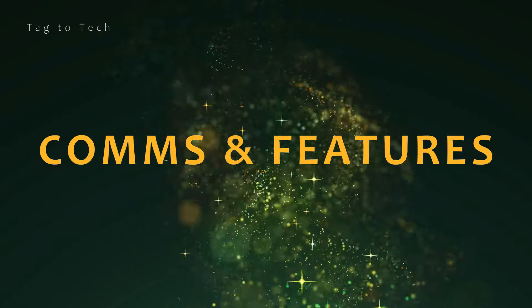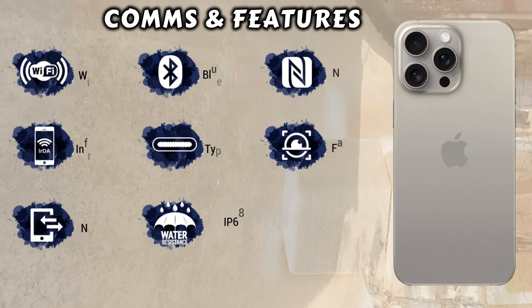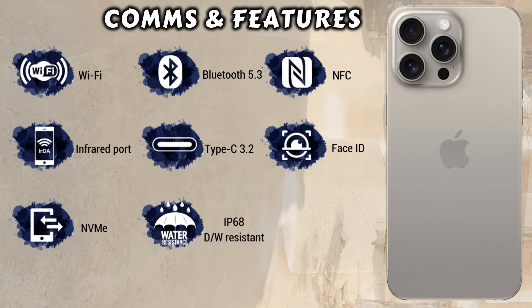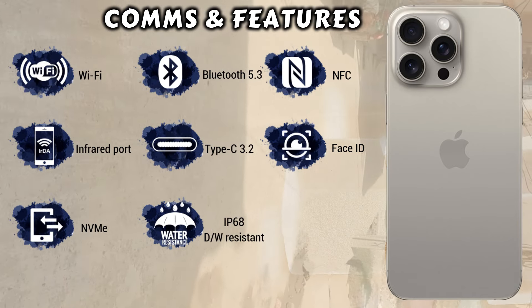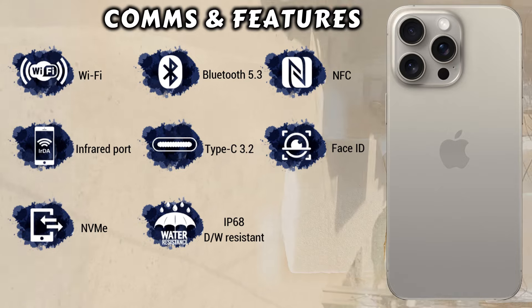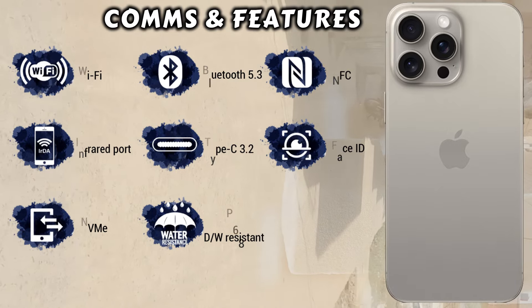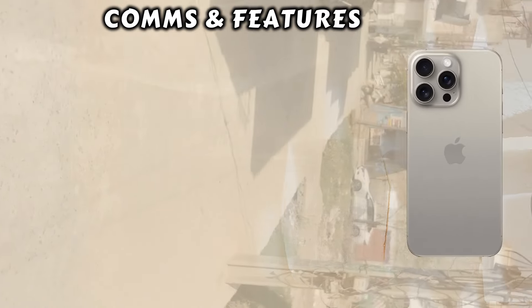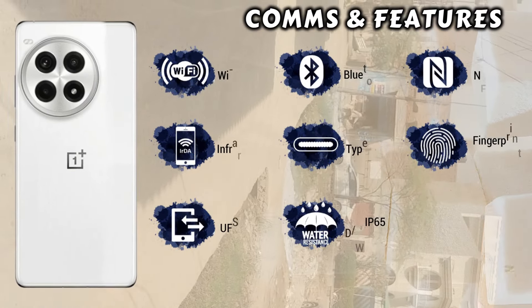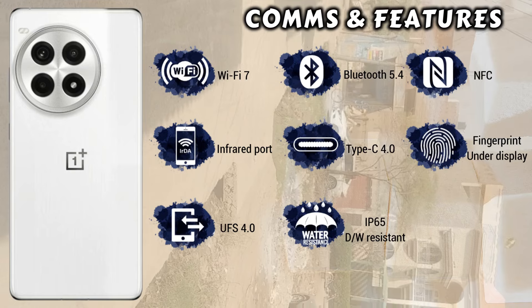Both devices support 5G networks. The iPhone 15 Pro Max features Wi-Fi 7, Bluetooth 5.3, NFC, infrared port, USB Type-C 3.2, Face ID unlocking, NVMe storage, and IP68 water and dust resistance. The OnePlus A3 Pro features Wi-Fi 7, Bluetooth 5.4, NFC, infrared port, USB Type-C, fingerprint unlocking, UFS 4.0 storage, and IP65 water and dust resistance.